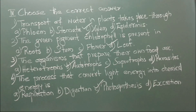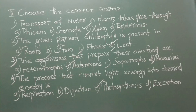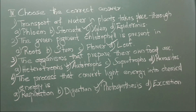Number 3: The organisms that prepare their own food are A. Heterotrophs, B. Autotrophs, C. Saprotrophs, D. Parasites. The correct answer is B, autotrophs. Number 4: The process that converts light energy into chemical energy is A. Respiration, B. Digestion, C. Photosynthesis, D. Excretion. The correct answer is option C, photosynthesis.